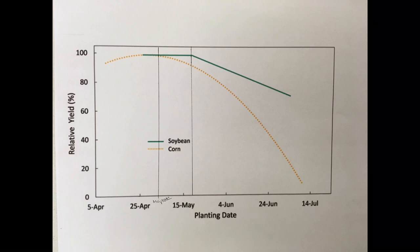I really want to focus on that period between May 10th and May 18th where those lines start to diverge. Around May 10th, that's when we're going to start to lose that yield potential on corn, where soybeans are going to tend to hang on until May 18th. So between the 10th and the 18th, that's when we're going to keep focusing on the corn to get it in the ground, so we can get those beans in the ground and be done planting those by about May 18th.